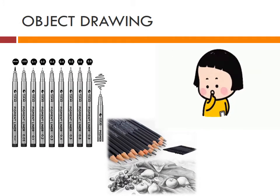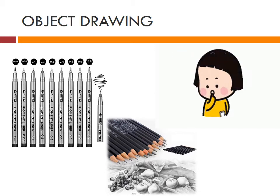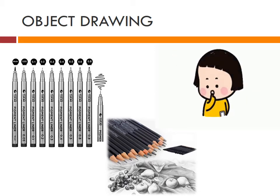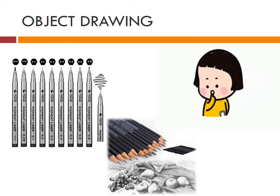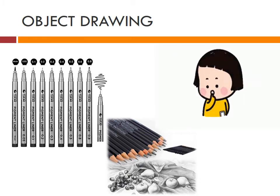Object drawing. What is object drawing? Object drawing is drawing from life. It can be done only through mental process. It can be done with pen or pencil using various techniques.